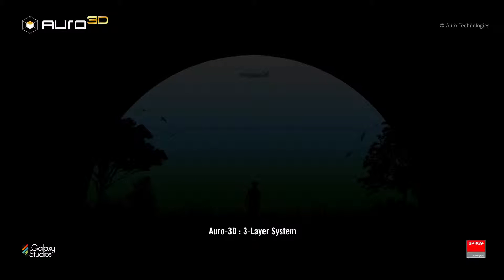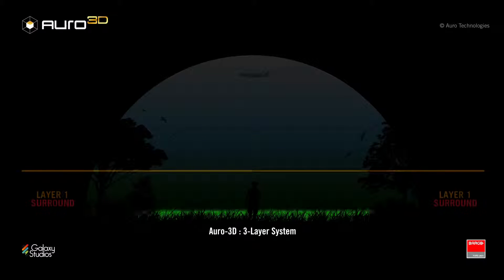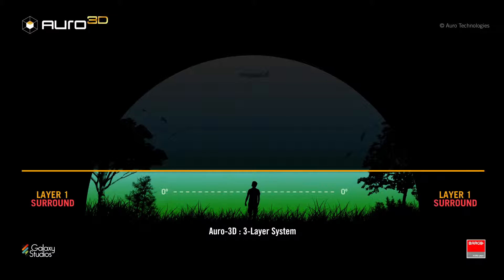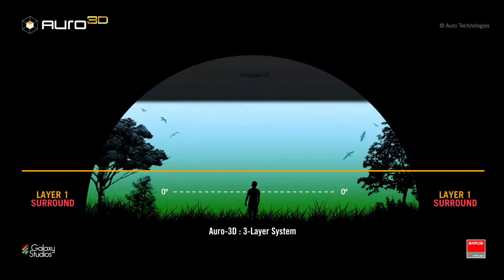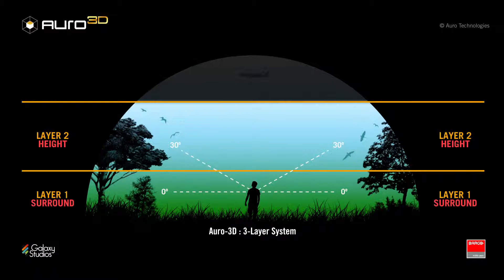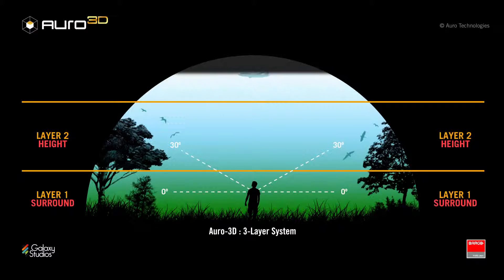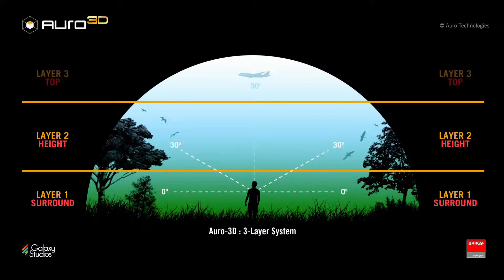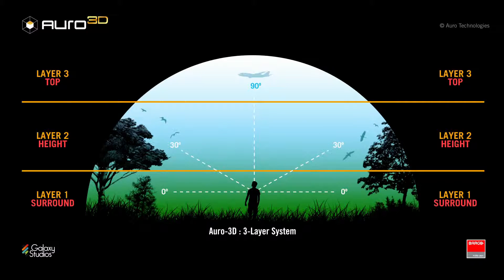Spatial sound can be divided into three different layers: sounds coming from the horizontal plane around us; above this is a second layer that reveals both direct sounds and height reflections. These reflections are important for our brains to better understand the sounds originating in the first layer. And the third layer reveals sounds that come from directly above us. This reproduction channel is also known as the Voice of God channel. Aural 3D achieves a reproduction system that uses these three layers to recreate the most efficient three-dimensional sound format with a minimum number of speakers.